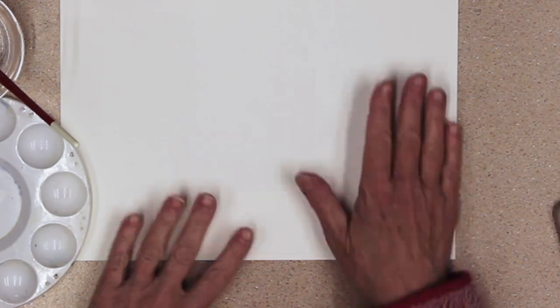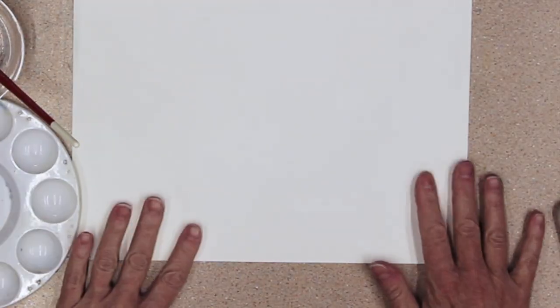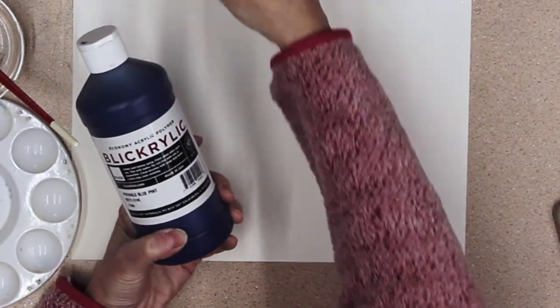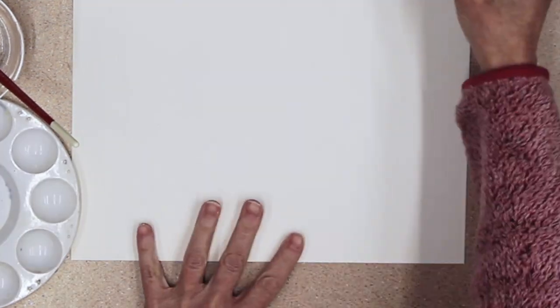Today it's about tints and shades. I'm going to use Blickrylick paint blue and red and white and black.